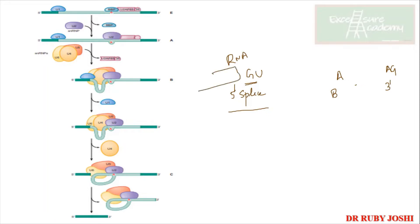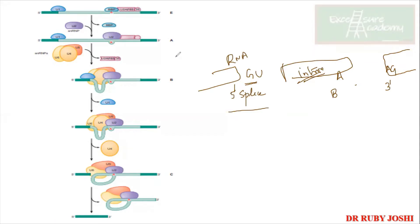This is a part of exon, this is a part of exon, and here you have got your intron. We need to remove this intron using the spliceosome machinery, which has several proteins involved in splicing. The first component is U1, which binds at the 5' splice site. All these are small nuclear ribonucleoprotein particles, known in short as snRNPs.